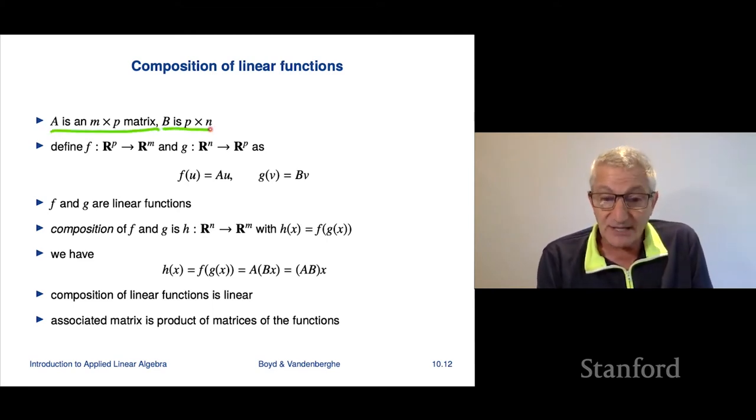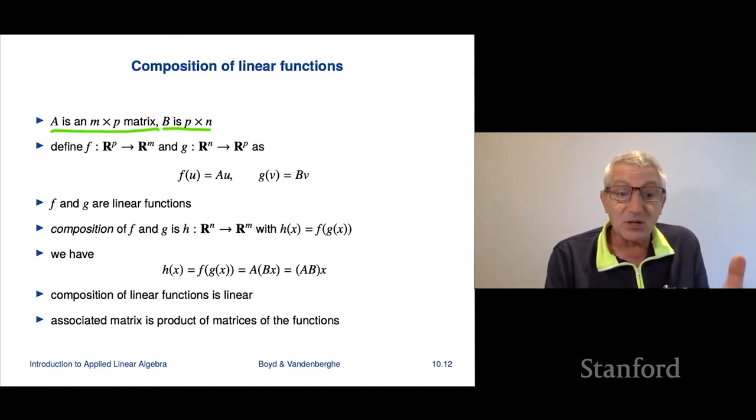So let's suppose A is an m by p matrix and B is p by n. So these are two matrices. Of course, I can form the product C equals AB.